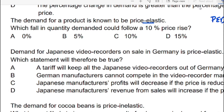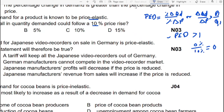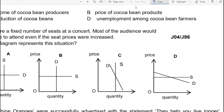The question asks: which fall in quantity demanded could follow a 10% price rise? Since demand is elastic, the answer must be greater than one, meaning the change in quantity must be more than 10%. For example, 0% divided by 10% equals 0; 5% over 10% equals 0.5; 10% over 10% equals 1 — none of these are greater than one. But 15% over 10% gives 1.5, which is greater than one. So option D is the correct answer.